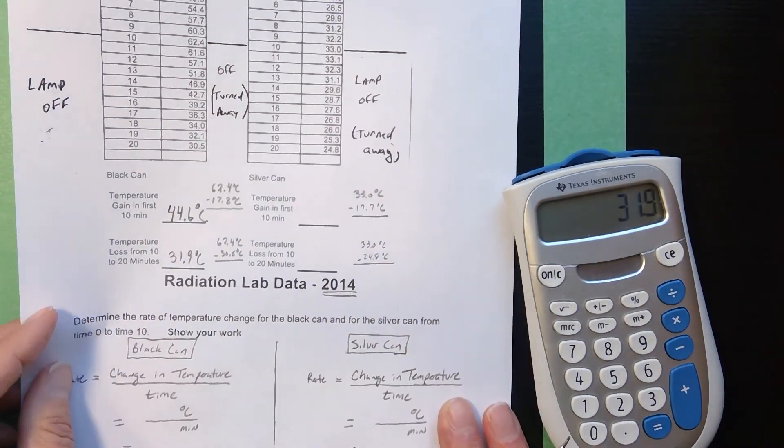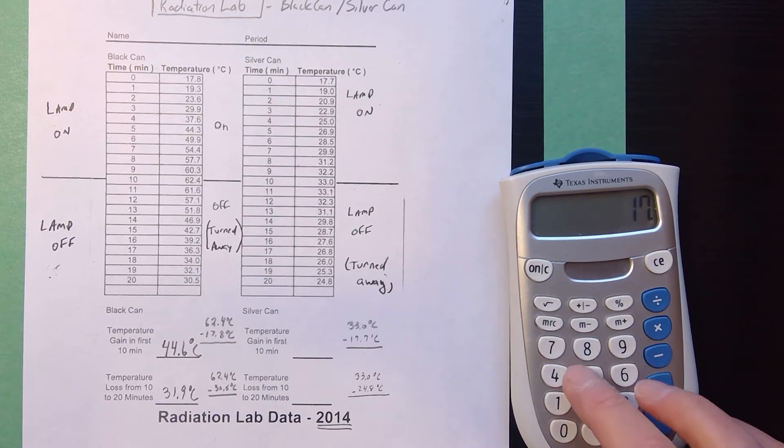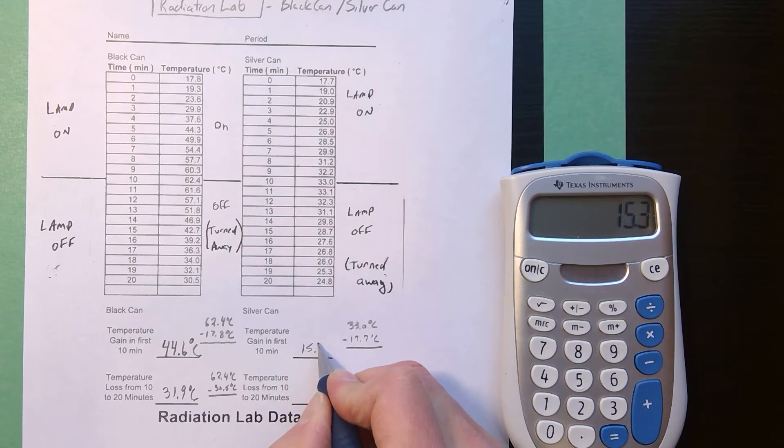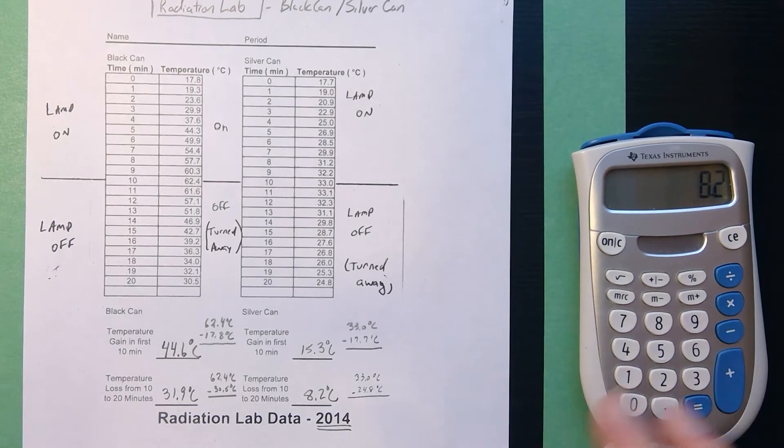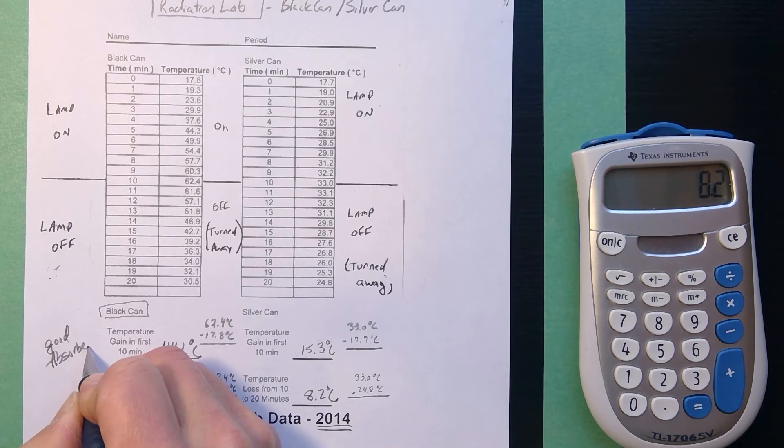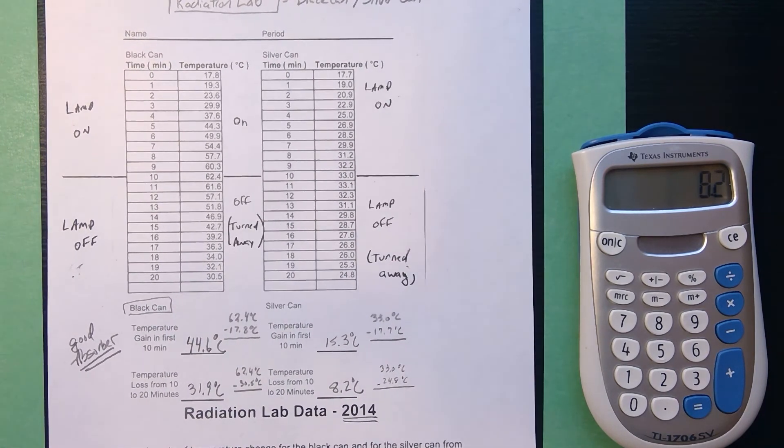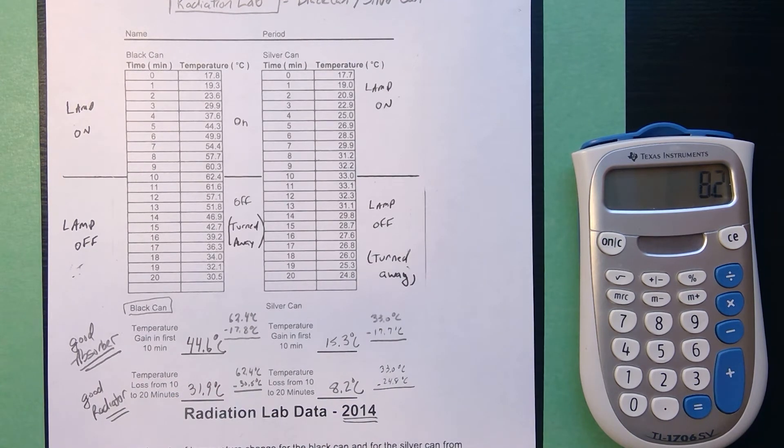Looking at the silver can we have 33.0 minus 17.7 the silver can only gained 15.3 degrees Celsius for the first 10 minutes it went from 33 back down to 24.8 and it only dropped 8.2 degrees Celsius for the last 10 minutes. So when you're looking at this obviously you see with the black can the black can was a good absorber it was a dark rough surface so it was able to absorb the energy well but once you turn the light bulb off it was a good radiator. Something that heats up rapidly cools down rapidly something that heats slowly cools slowly.